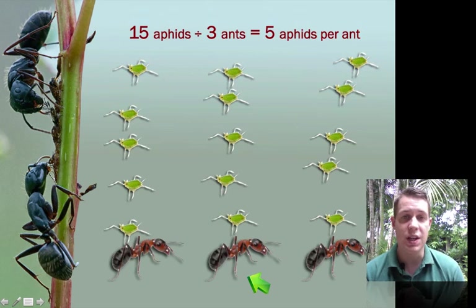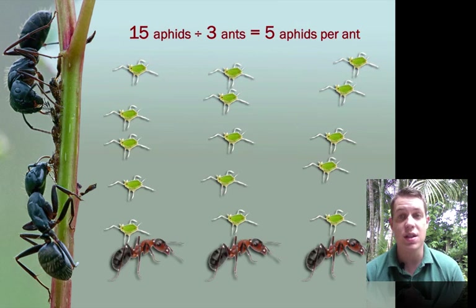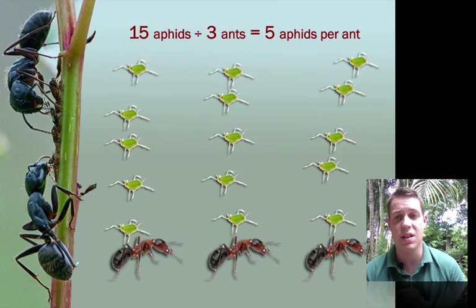So if we write the problem, 15 aphids divided by 3 ants of course equals 5 aphids per ant. And we can see this right here.